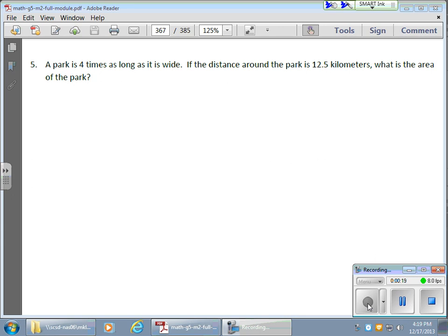So we have a park, and it looks like it's in the shape of a rectangle, so the first thing I'm going to do is draw a nice little rectangle right here. And it looks like the length there is four times the width. The distance around the park, call that a perimeter, is 12.5 kilometers, and we need to find the area. So I need to find out the length and the width. Here's my length. Here's my width. I know that the length is four times the width, so whatever the width is, the length is four times that size.